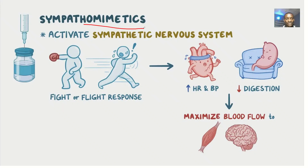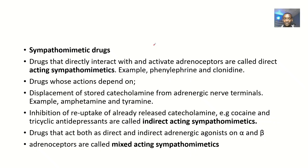Sympathomimetic drugs basically activate the sympathetic nervous system for flight, fright, and fight — they increase metabolic rates in your body. Drugs that directly interact with and activate adrenoceptors are called direct acting sympathomimetic drugs. Examples of them include phenylephrine and clonidine.